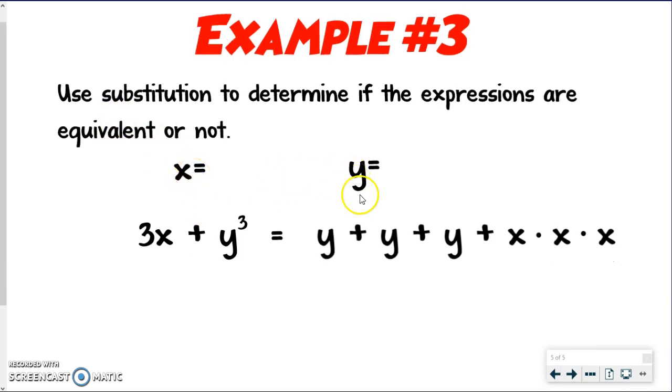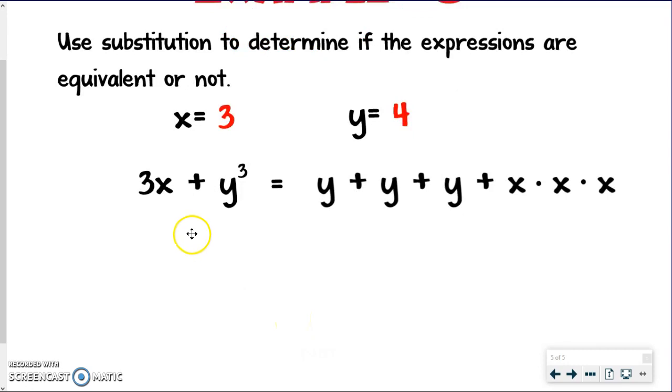All right. So I've got an X and a Y. And so I'm going to, again, I'm just going to pick 3 and 4. Keep it simple, right? But if you want to try something different, go ahead. Just make sure X and Y, the numbers are different because they're different variables.